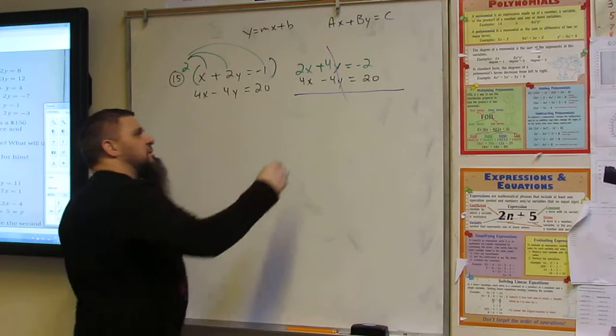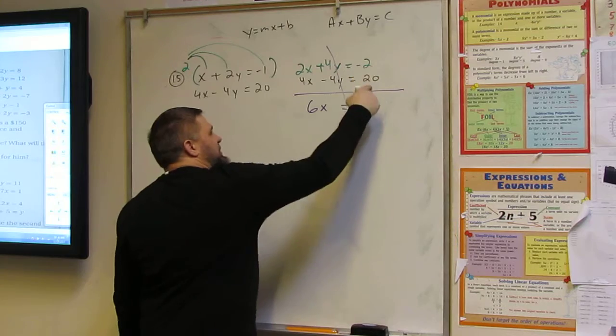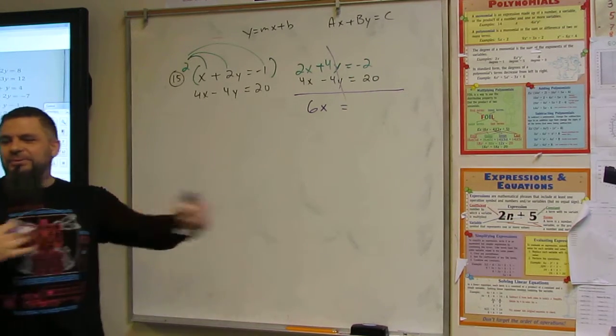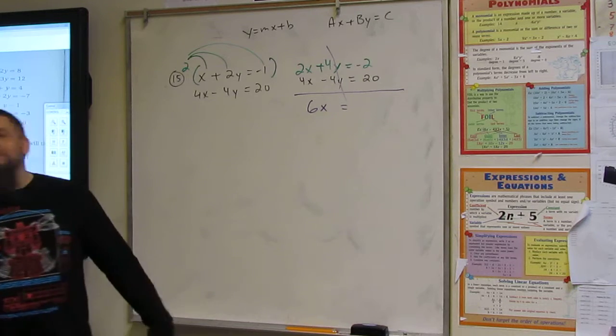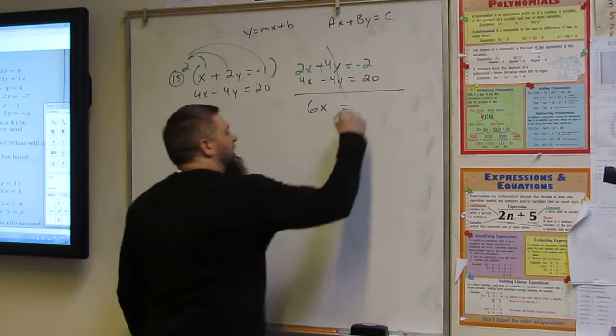Two plus four is? Six. Negative two and 20? We're adding. Eighteen. Very good.